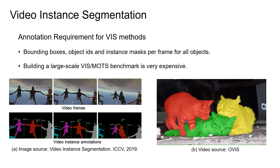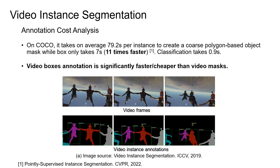Video instance segmentation involves tracking and segmenting all objects within a video from a given set of semantic classes. For building a large-scale VIS benchmark with thousands of videos, annotators need to provide bounding boxes, object IDs, and instance masks per frame for all objects. This makes building a large-scale VIS benchmark very expensive and time-consuming. Video annotation is costly, in particular regarding object mask labels. Even coarse polygon-based mask annotation is multiple times slower than annotating video bounding boxes. Expensive mask annotation makes existing VIS benchmarks difficult to scale, limiting the number of object categories covered.